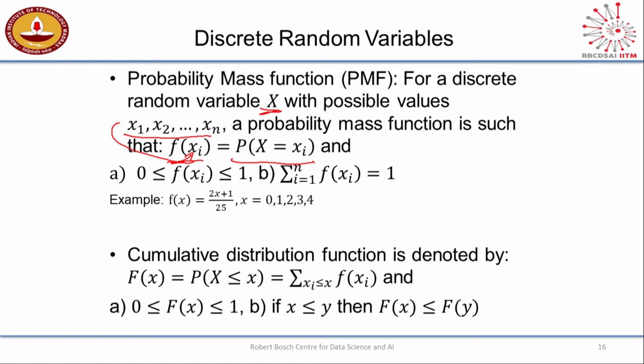Therefore it must follow that for any particular xi that I substitute, the value should be between 0 and 1. It should also follow that if I add up every possible xi — going from i equals 1 to n, if there are n outcomes — I should be able to get 1 when I sum this.